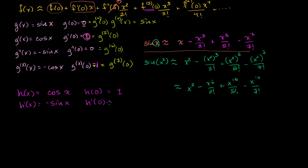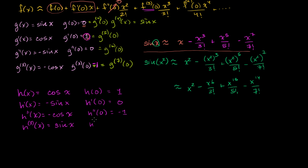The first derivative at 0 is negative sine of 0, which is just 0. The second derivative of h of x — the derivative of sine of x is cosine of x, but we have that negative out front, so it's negative cosine of x. So h double prime of 0 equals negative 1. The third derivative of h is positive sine of x, so the third derivative at 0 is 0. Then taking the derivative again, you get cosine of x, and the cycle starts again.